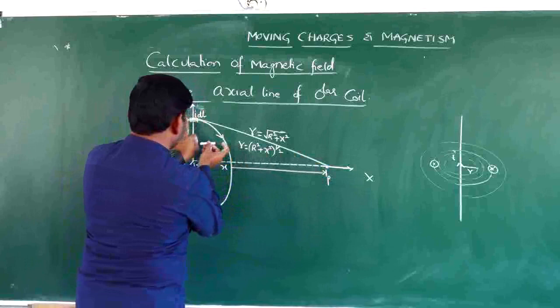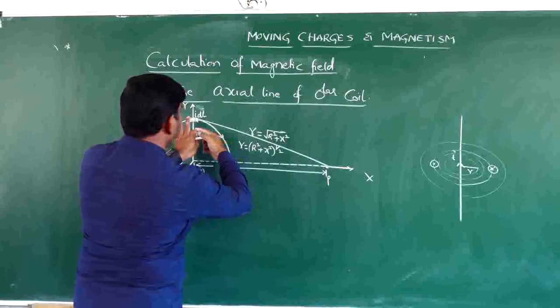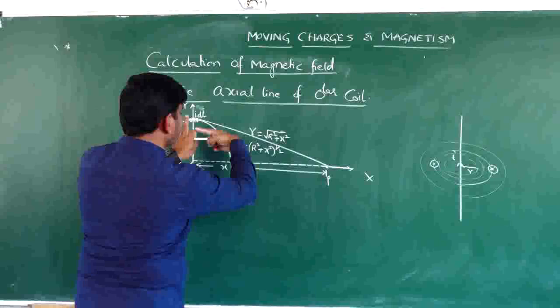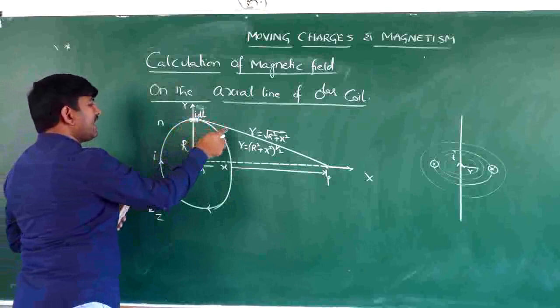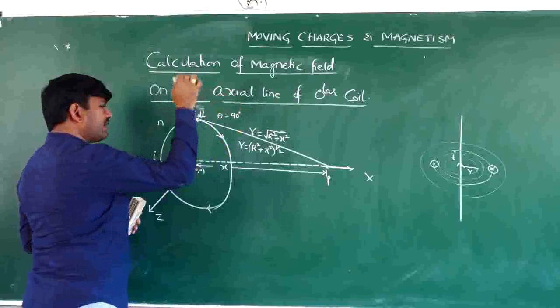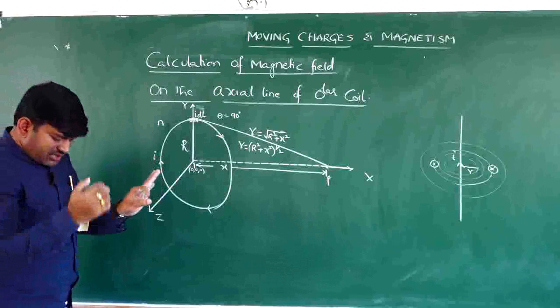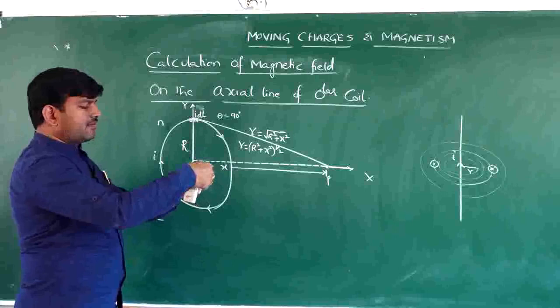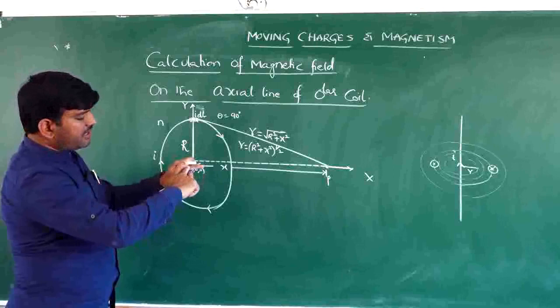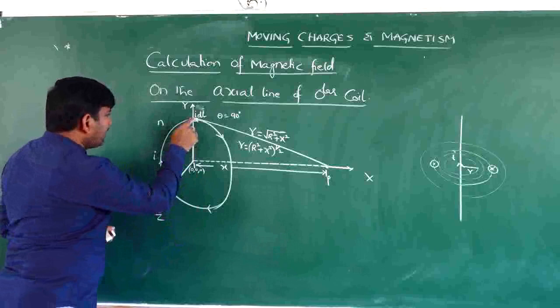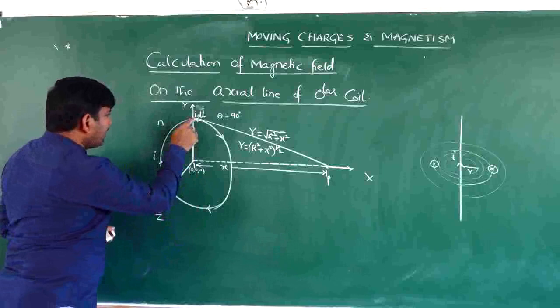Because of this current element: the current element is tangential and r is like this. The angle between idL and r-bar is always equal to 90 degrees at any point on the coil, because idL is tangential and r-bar is directed from the element to the point P. Therefore, theta = 90°.